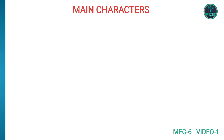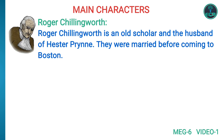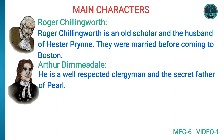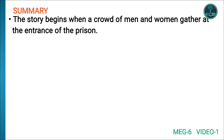Next is Roger Chillingworth, an old scholar and the husband of Hester Prynne. They were married before coming to Boston. Then we have Arthur Dimmesdale, a well-respected clergyman and the secret father of Pearl. Other characters in the novel are Mr. Stevens, Governor Bellingham, John Wilson, and Jonathan Pue.